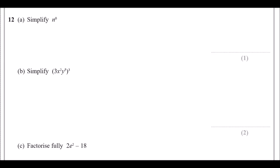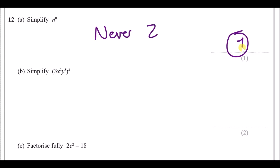Number twelve, part a: simplify n to the power zero. Anything to the power zero is always one — never zero. Be careful: raising to the power zero is like dividing a number by itself, so the answer is always one.